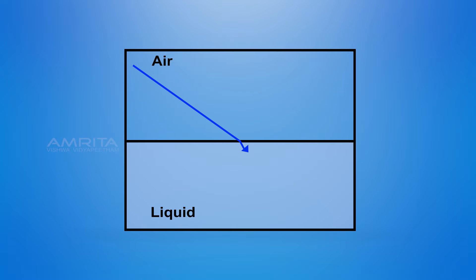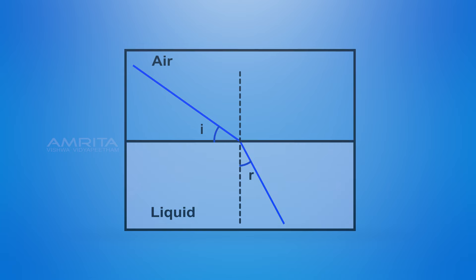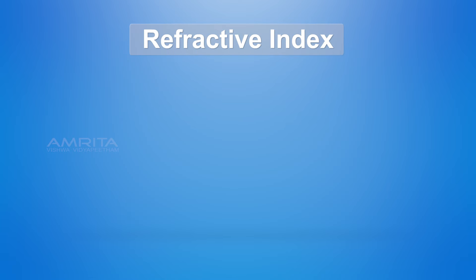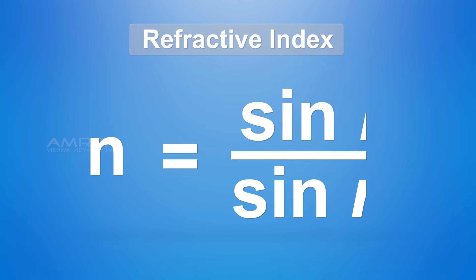If i is the angle of incidence of a ray in vacuum and r is the angle of refraction, the refractive index n is defined as the ratio of the sine of the angle of incidence to the sine of the angle of refraction.